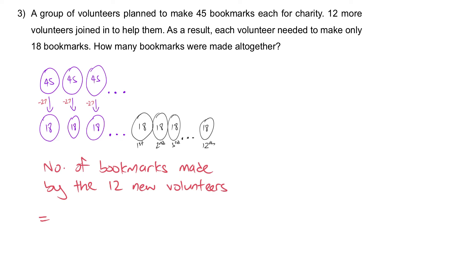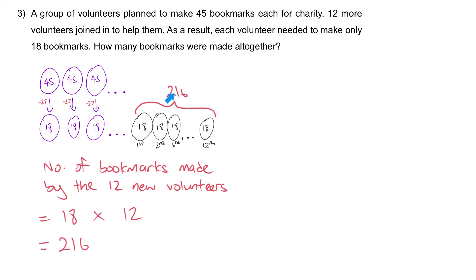Each of them has to do 18 at the end, so it's 18 times 12, which gives you 180 plus 36, that will be 216. To repeat: these 12 new volunteers in total have to make a combined 216. Where does this 216 come from? It comes from the 27 reductions from each original volunteer — the 27, the 27, the 27, adding up to make 216.